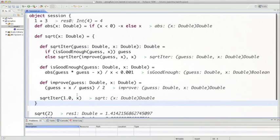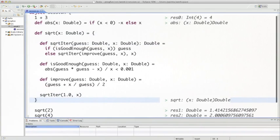I reformat, and there what do we see? We see the function square root that now contains square root iter, is good enough, and improve as well as the return value of square root. The return value here comes last.